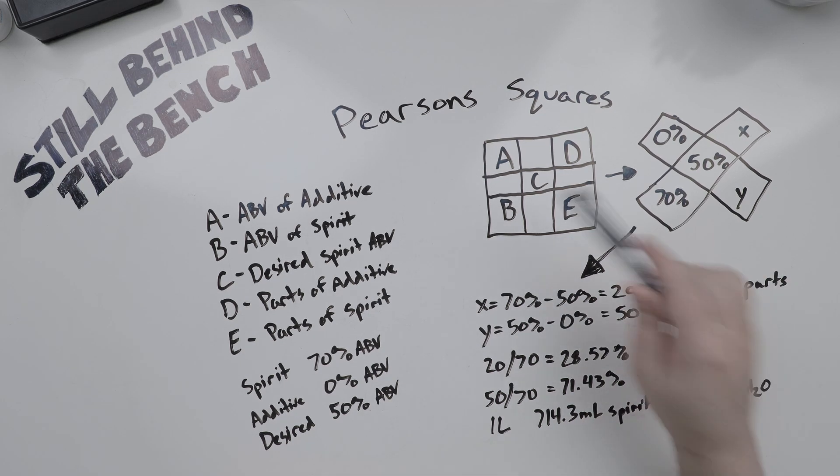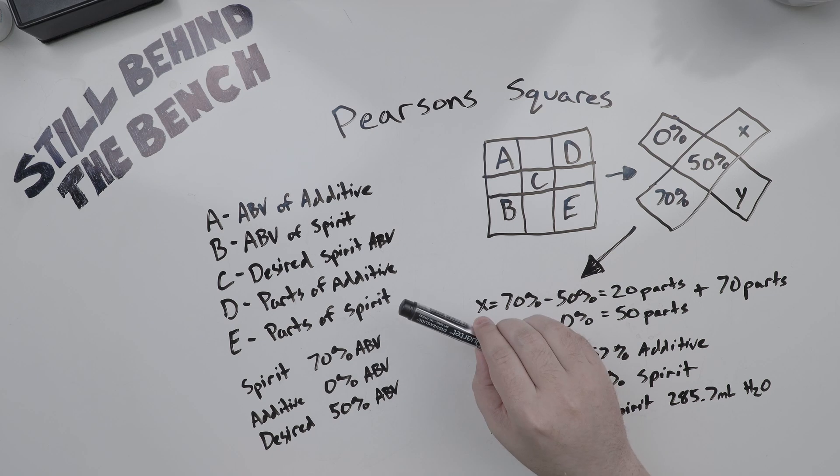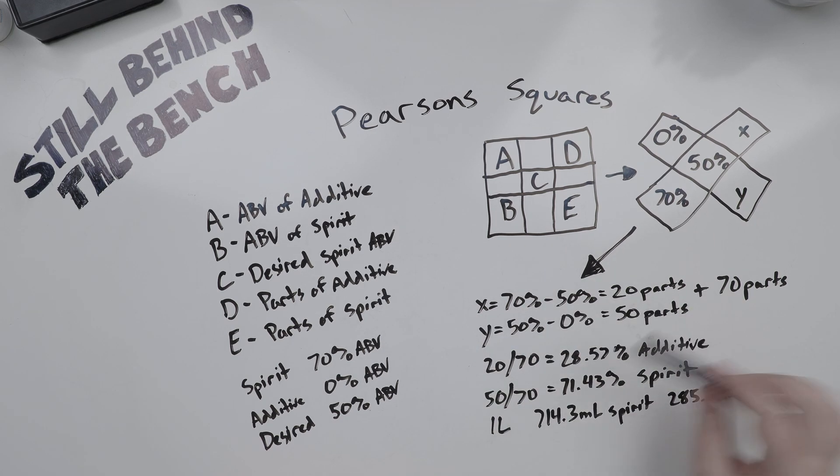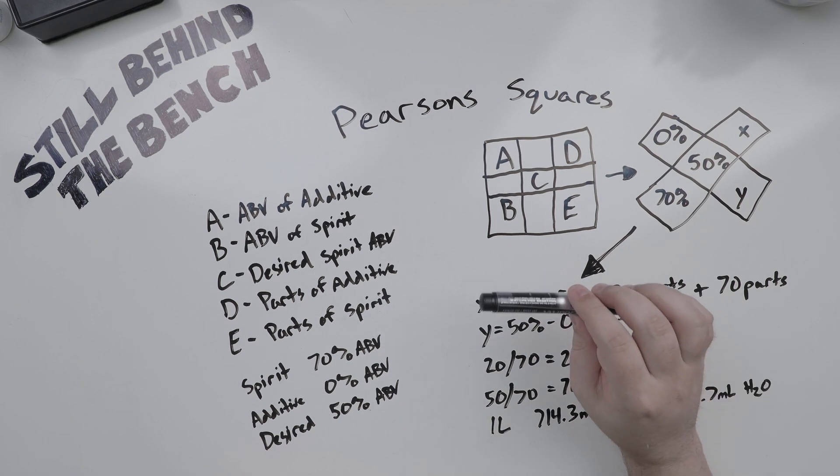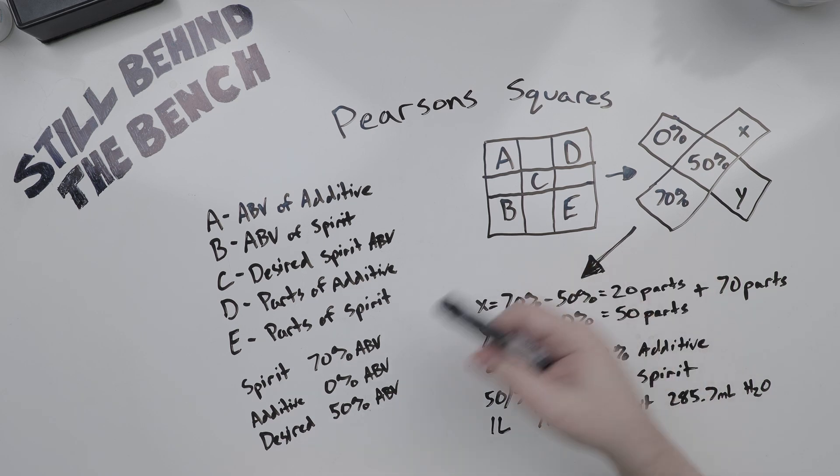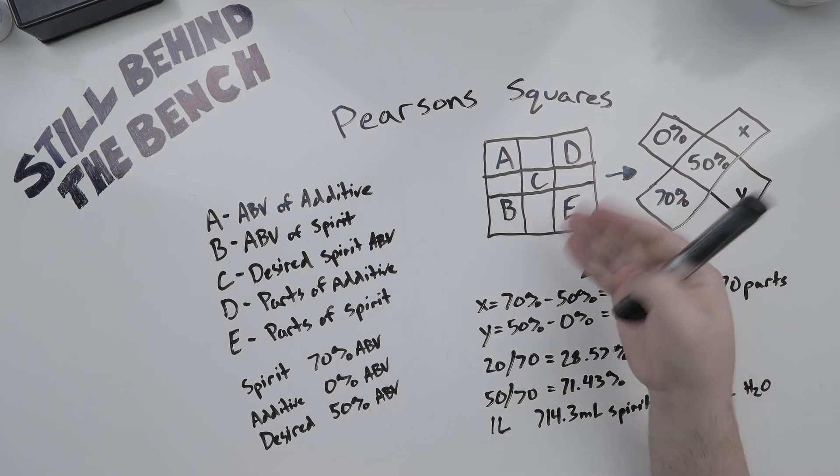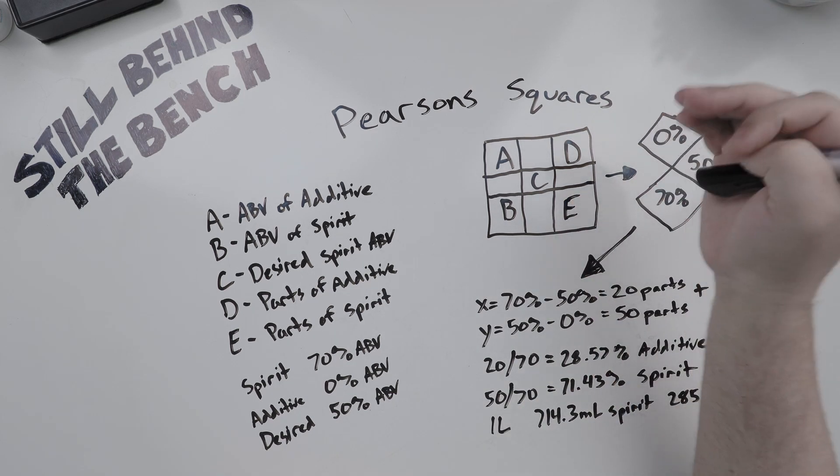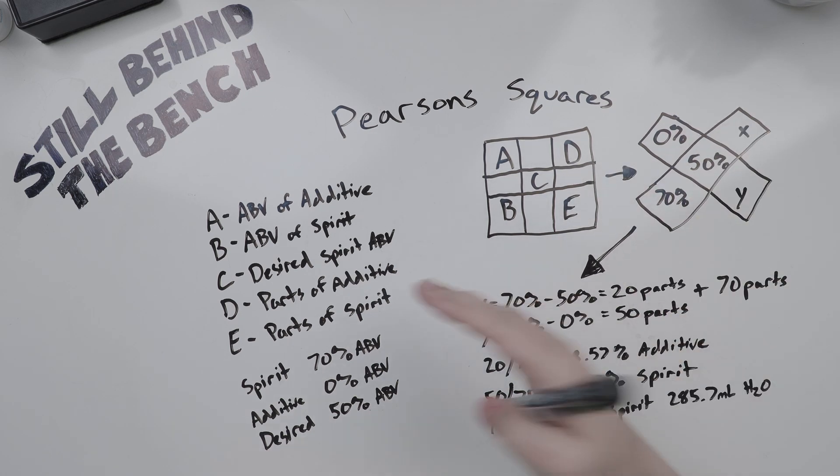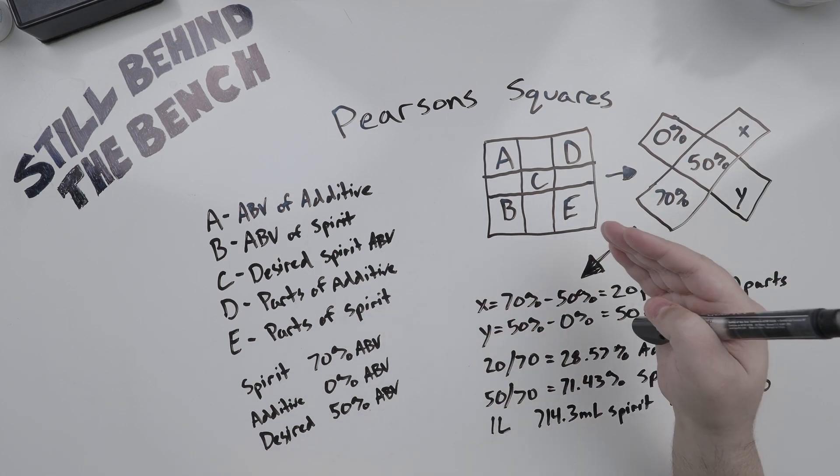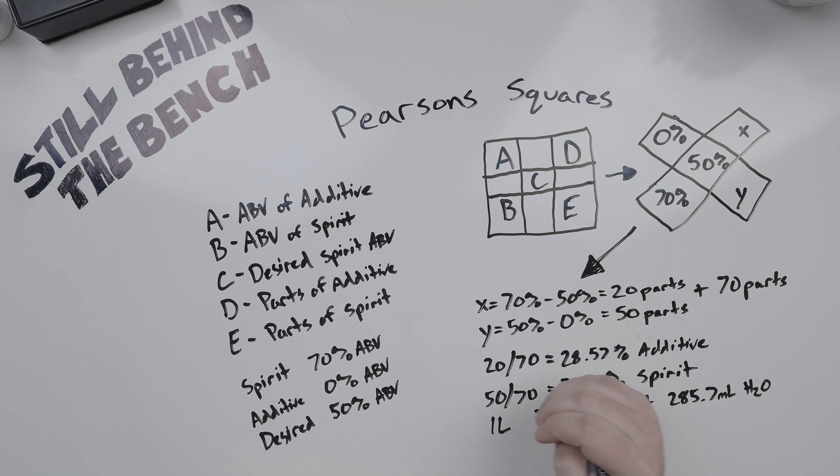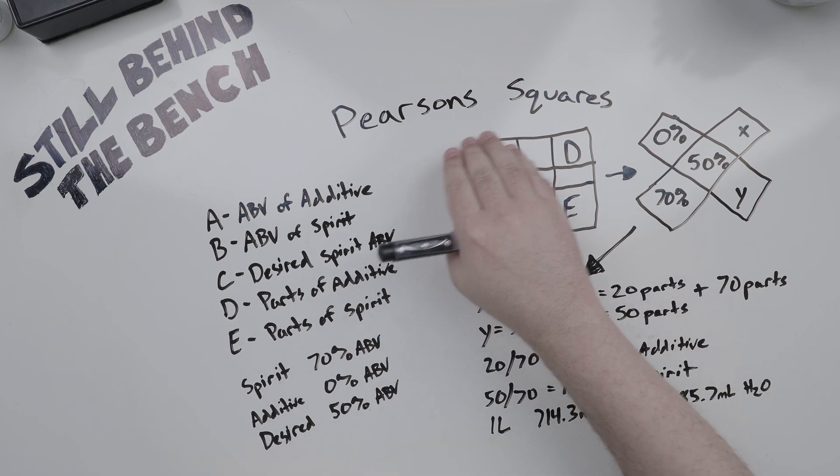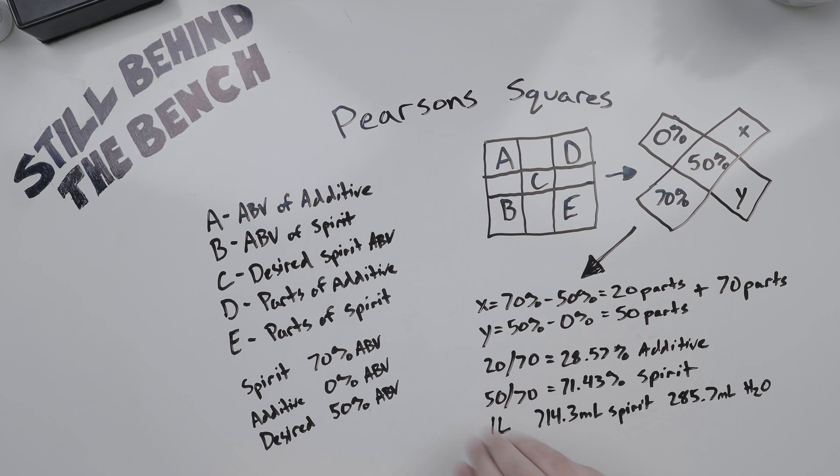So why did I bother teaching you the Pearson square when we could have just used a simple dilution formula? Well, the thing about the dilution formulas is they can only be used for dilution, to bring the concentration down. If you try to go from a lower concentration to a higher concentration, you start getting weird numbers. But the Pearson square, you can use it to go both up and down. Let's talk a bit about fortifying.